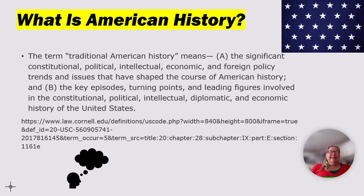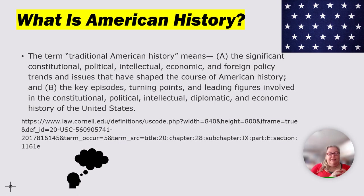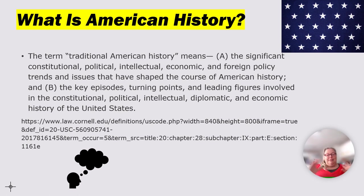So what exactly is American history? Cornell Law School defines it this way. The term 'traditional American history' means: A, the significant constitutional, political, intellectual, economic, and foreign policy trends and issues that have shaped the course of American history; and B, the key episodes, turning points, and leading figures involved in the constitutional, political, intellectual, diplomatic, and economic history of the United States. Cornell Law pretty much has got that nailed. I find this to be a pretty comprehensive view of what American history is, as it does differ significantly from world history.